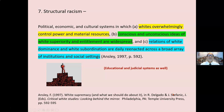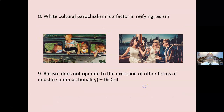Structural racism: political, economic, and cultural systems in which whites overwhelmingly control power and material resources; conscious and unconscious ideas of white superiority and entitlement are widespread; and relations of white dominance and subordination are daily reenacted across a broad array of institutions and social settings. White cultural parochialism is a factor in reifying racism. These are our values — the white majority considers itself normal. Everything that doesn't measure up to that is seen as abnormal, deficient, or deviant. People are measured by how closely their views and values match those of the white majority.